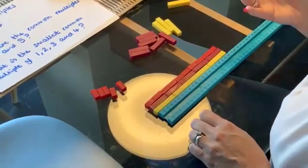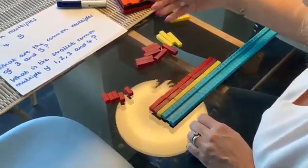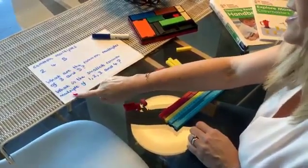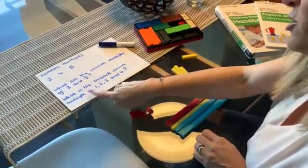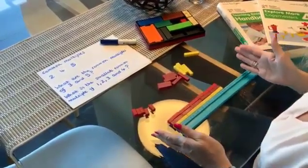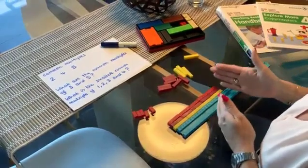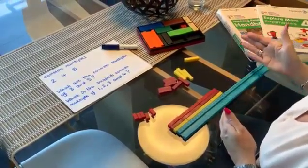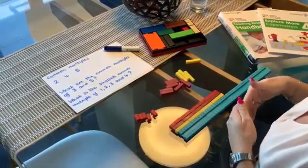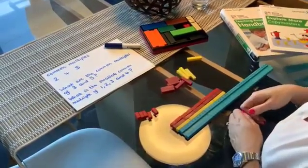And we can start to explore other common multiples. So we could look at what's the common multiples of three and five. This is a nice one. What is the smallest common multiple of one, two, three and four? So again, the similar way we're laying out those trains of the rods and then looking at where they will match up. Then what the children predict the next one would be. Then we can look at the smallest common multiples, which is a really nice activity to focus on for year four.